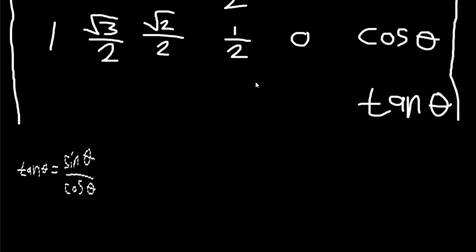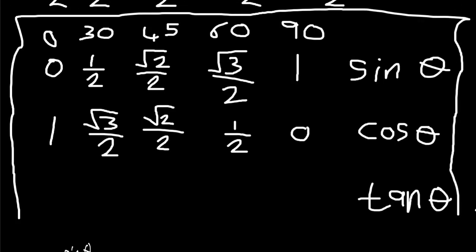Tan theta equals sine theta over cos theta. So for tan 90: sine 90 is one and cos 90 is zero, so tan 90 equals one over zero. We all know that any number divided by zero is undefined — so tan 90 is undefined.